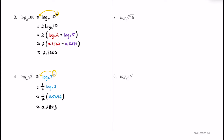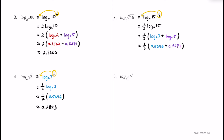For number 7, we have log base a of the cube root of 15. Rewriting the radical in exponential form, the cube root is the same as raising to the 1 third power, so we have log base a of 15 to the 1 third power. Using the power property, we bring the 1 third in front, giving us 1 third times log base a of 15. Using the product property, we break 15 into 5 and 3, writing 1 third times the quantity of log base a of 3 plus log base a of 5. Substituting the decimals, we get about 0.4639.